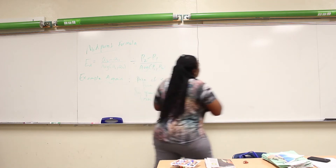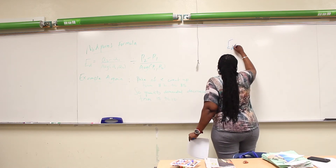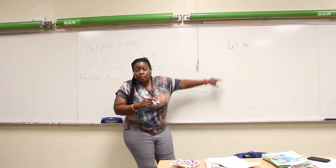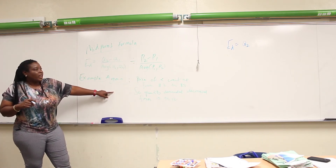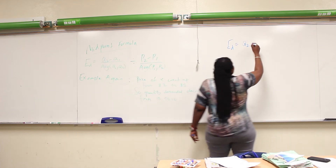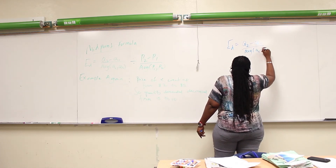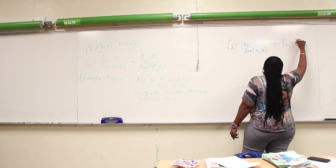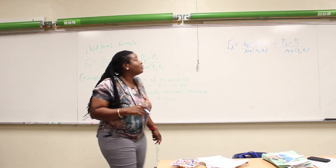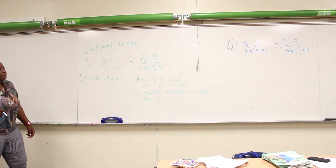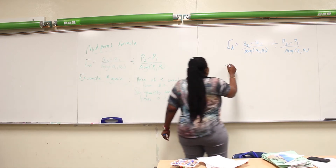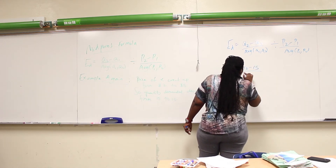I like to write my formulas — it helps me to remember. The midpoint formula says: take the two quantities, subtract them, and divide by the average of the quantities. Price of X went up from 2 to 5, so quantity demanded decreased from 15 to 10. Take these two, subtract them, divide by the average of the two.